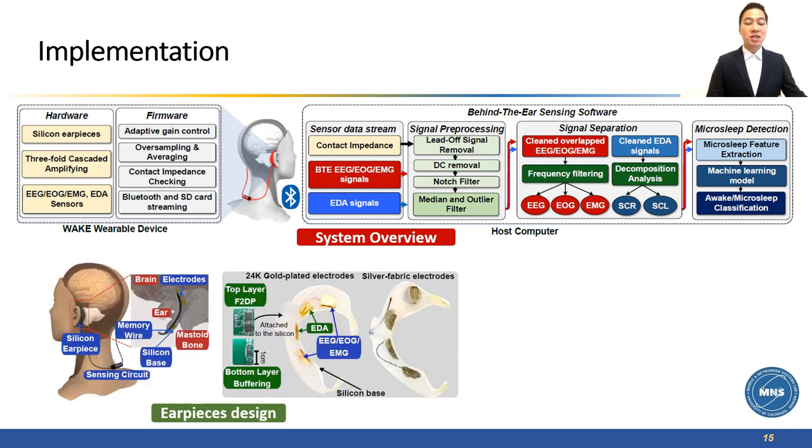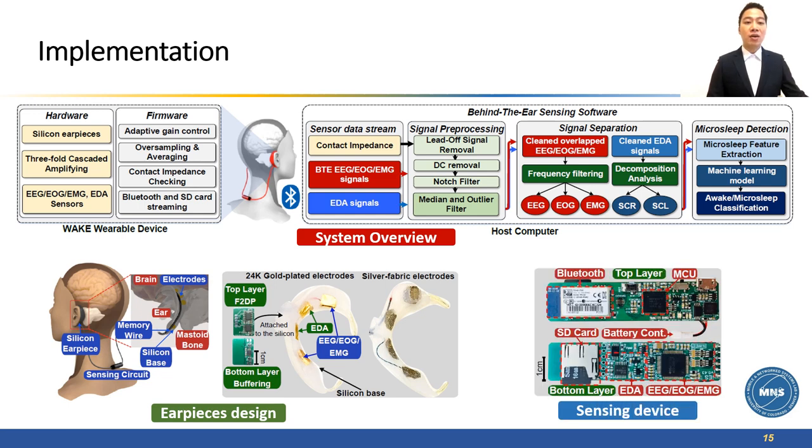The following figures show the design of our behind-the-ear silicon earpiece. We choose silicon so it can be comfortable to wear and deform with different ear shapes. We embed a memory wire inside the earpiece to keep our sensing electrodes contacted with the skin. The last figure shows our custom-built sensing hardware. We have a low-power MCU, an analog front end, and a Bluetooth module to provide wireless communication.